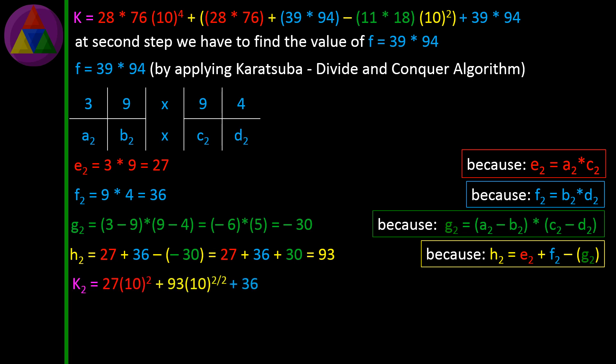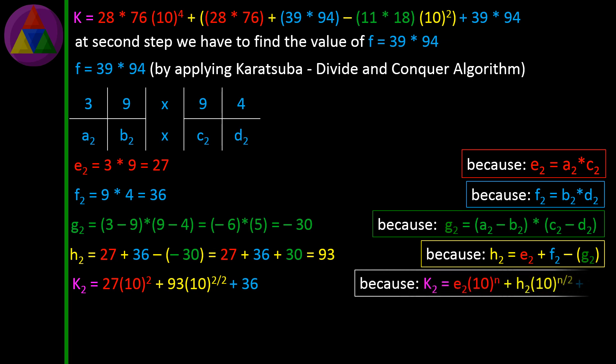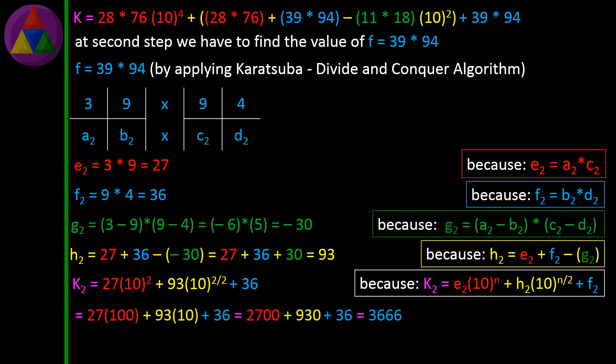K2 = 27×10^2 + 93×10^(2/2) + 36 = 27×100 + 93×10 + 36 = 2700 + 930 + 36 = 3666, because K2 = E2×10^2 + H2×10^1 + F2.